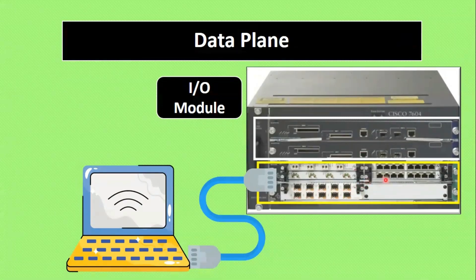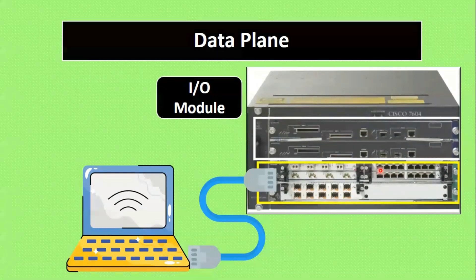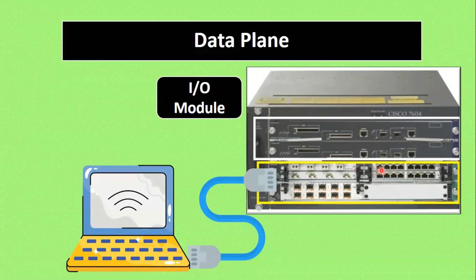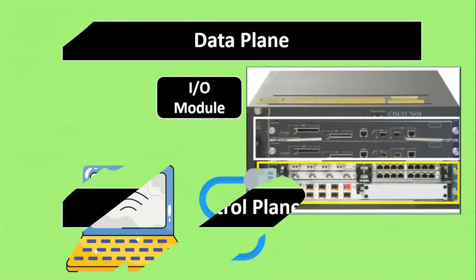The data plane acts as the traffic handler for all interfaces. For example, interfaces like FastEthernet 0/1, 0/2, and all interfaces connected to laptops or IP phones — these will be sending or receiving packets. That is what we refer to as the data plane.